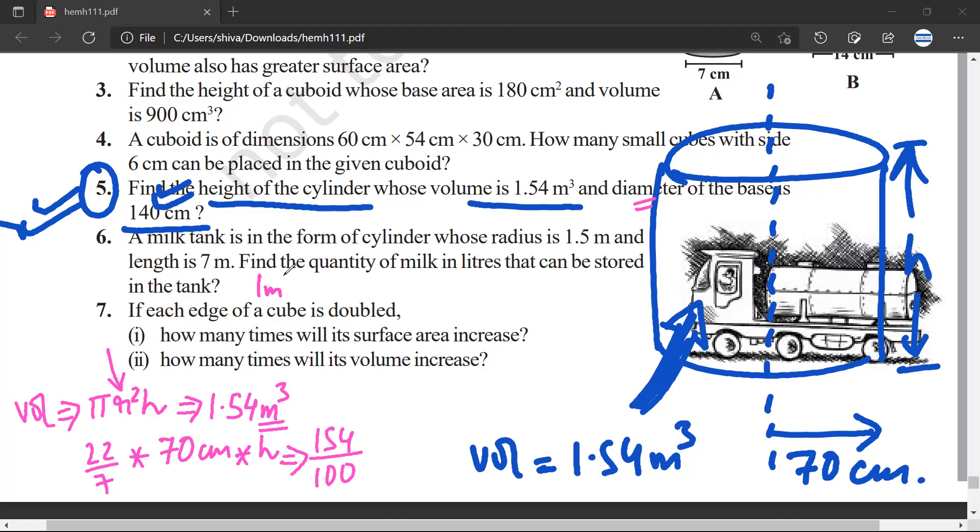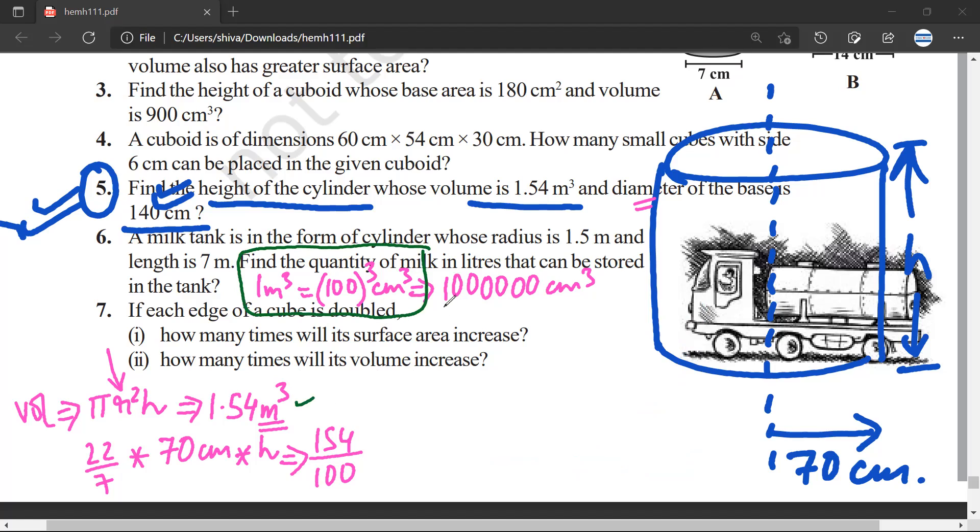Now one meter cube is equal to 100 centimeter times 100 centimeter times 100 centimeter, which is equal to one million centimeter cube Sarthak. So at times it becomes confusing but if you follow this logic then things become easier. This was meter cube. Now what I have found is that one meter cube is equal to one million centimeter cube. So therefore this would be 1.54 times one million.